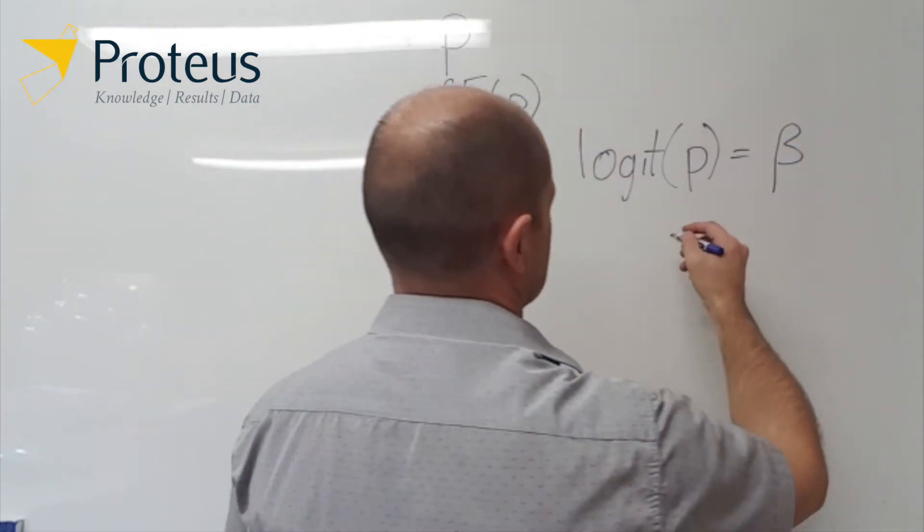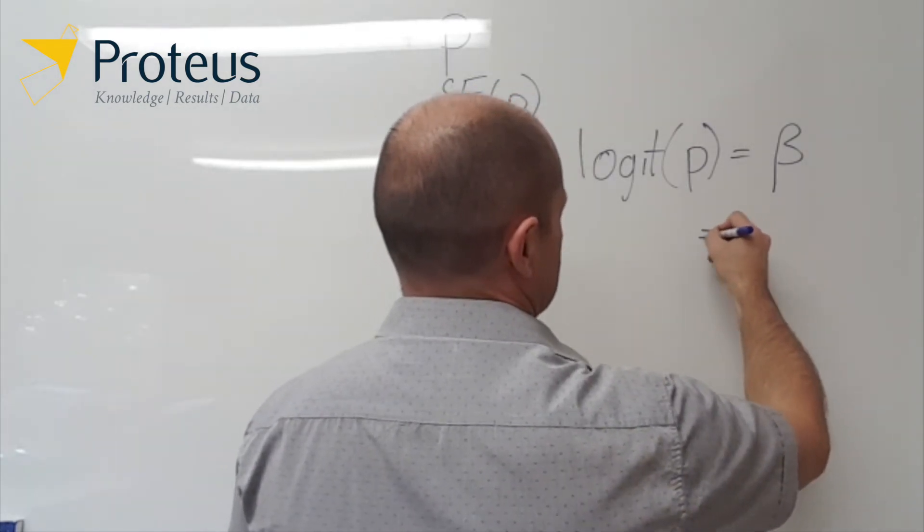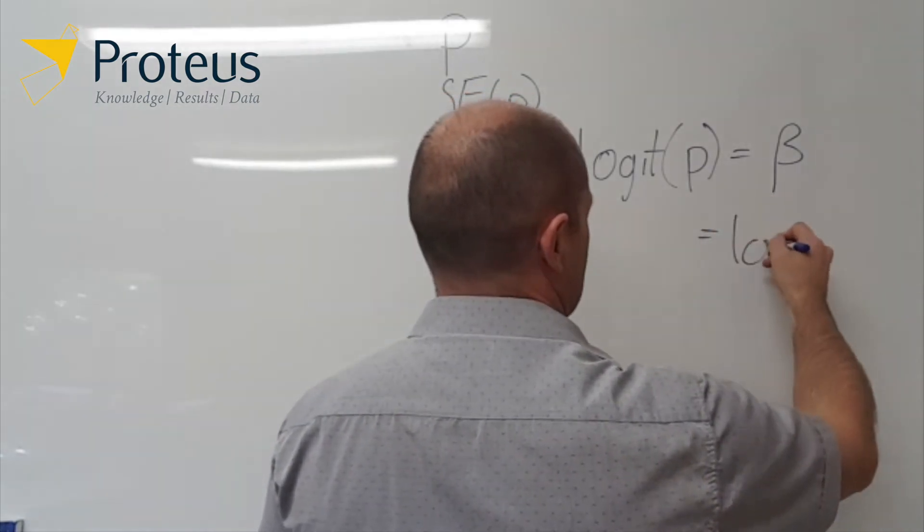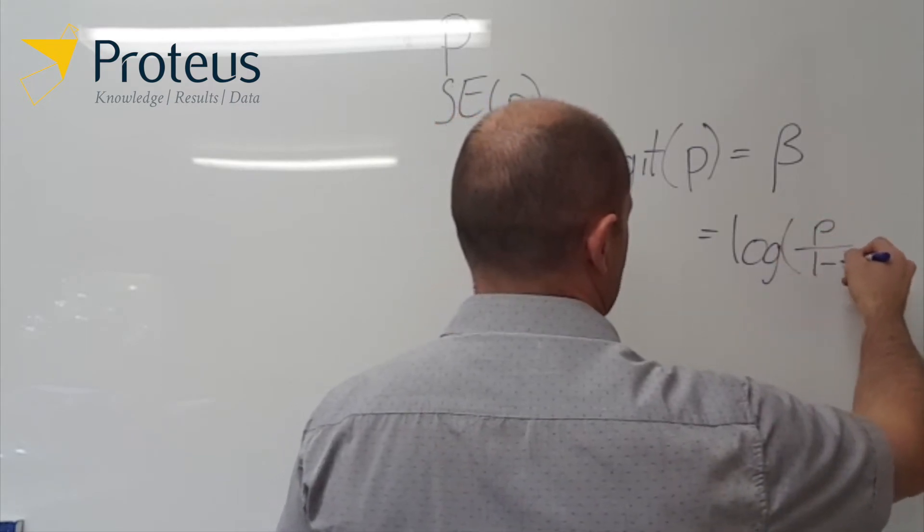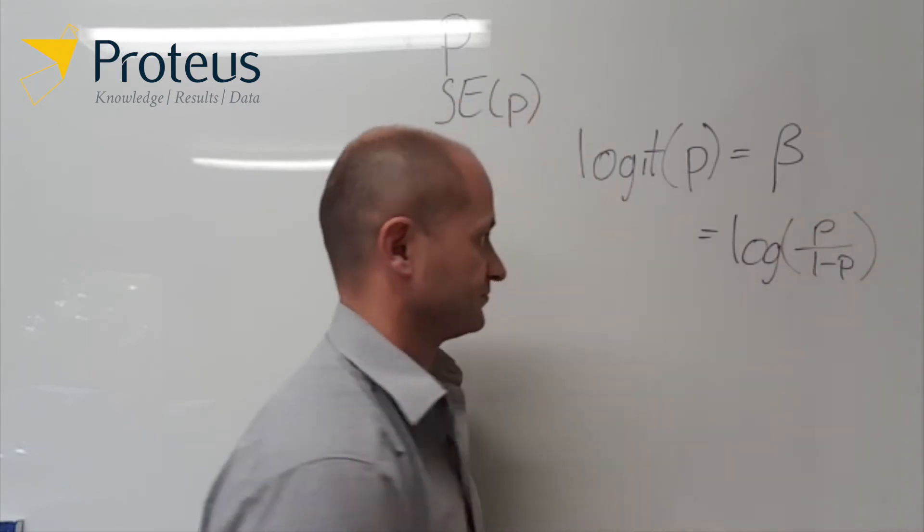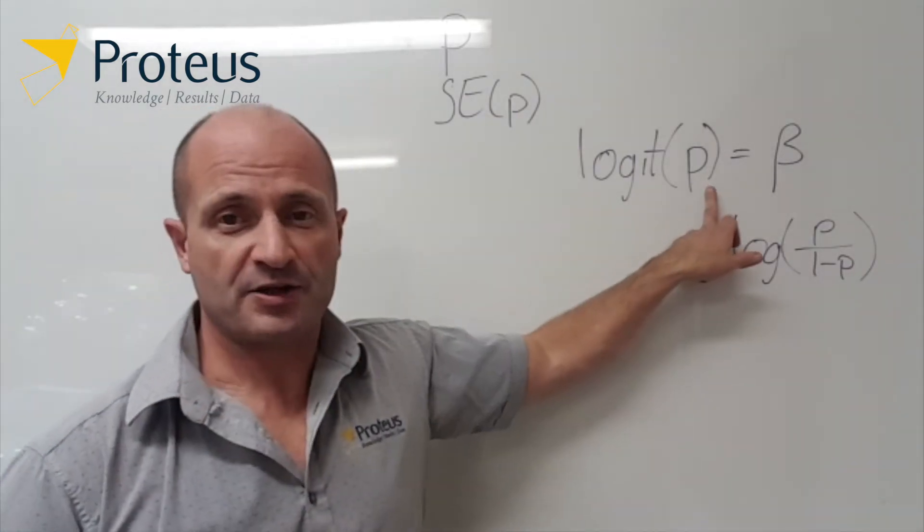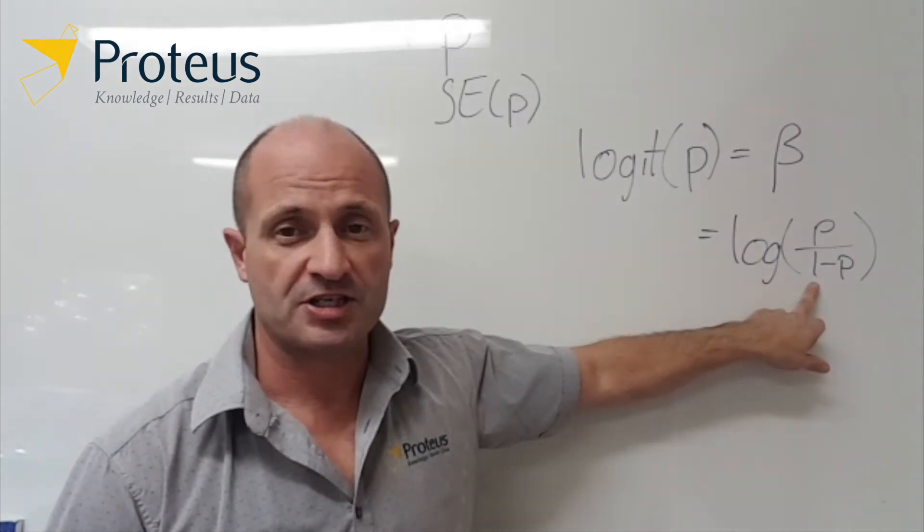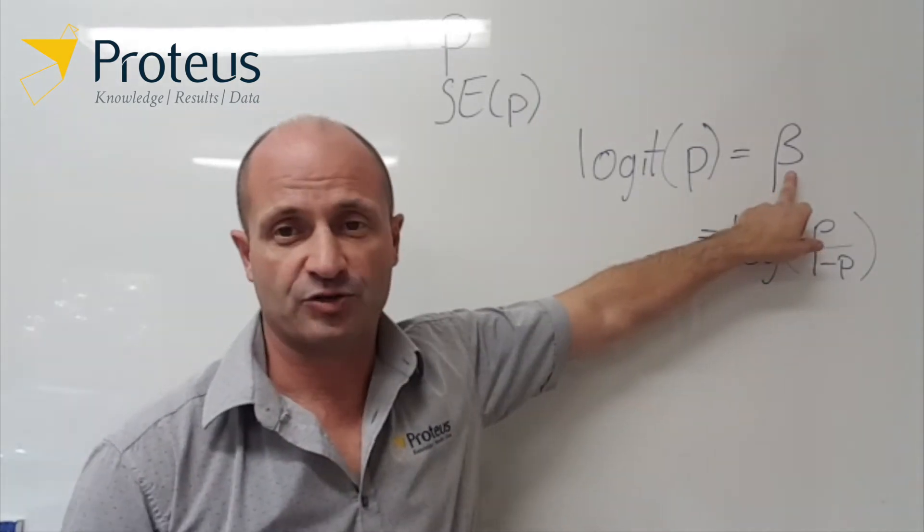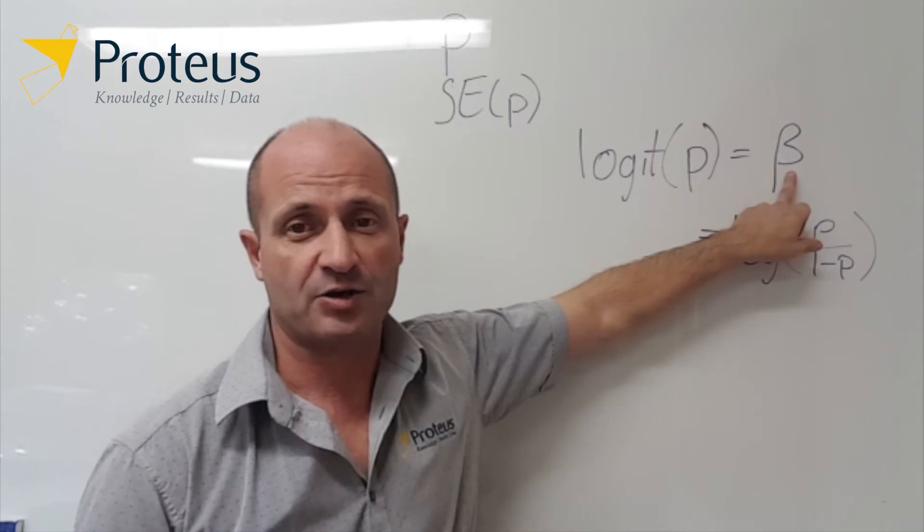Now that is the same, the logit link is the log of the probability divided by 1 minus the probability. So if I have a value for that probability, then if I insert that into this equation here, I can get my estimate or my value on that logit scale fairly easily.